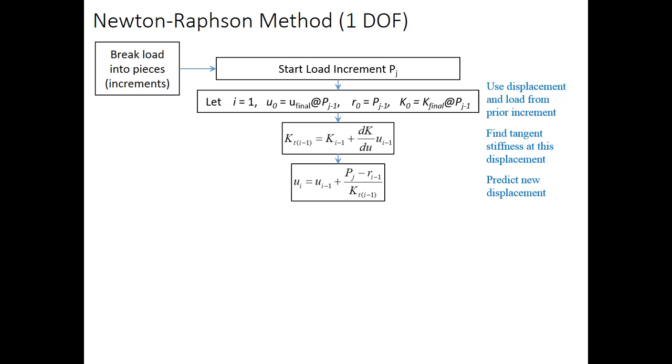If we're starting at 0, that term would be 0. We're dividing that by the tangent stiffness corresponding to iteration 0.